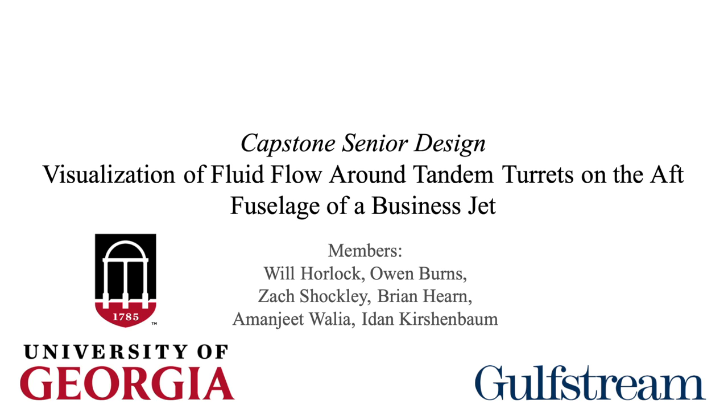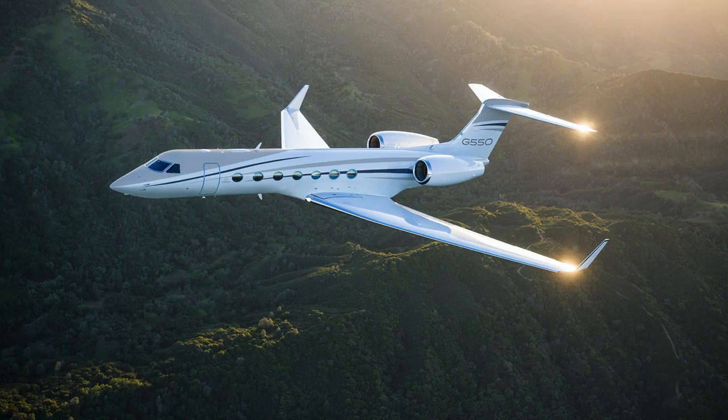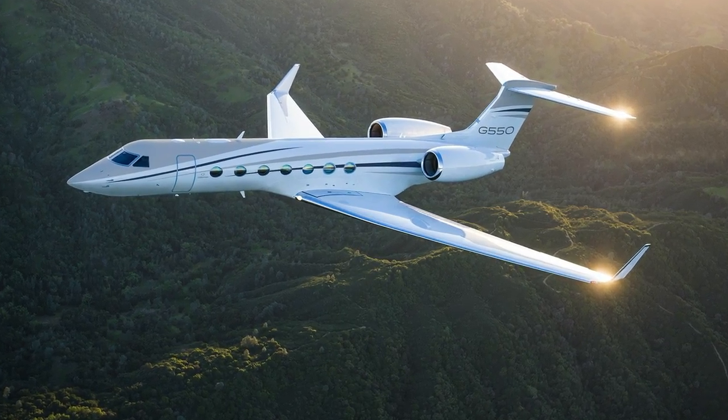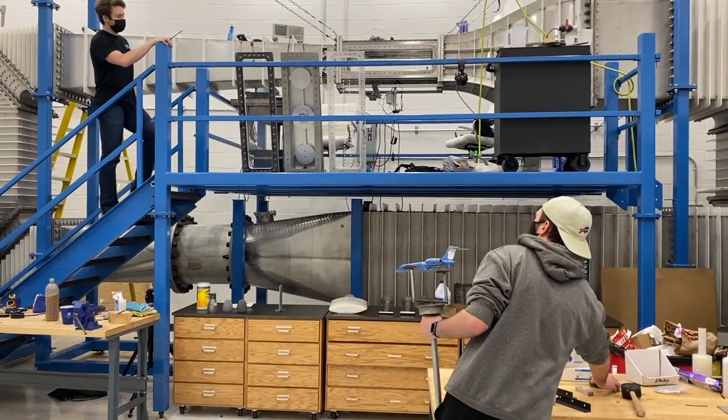The team was tasked with modeling and visualizing the fluid flow around a set of tandem turrets on the aft fuselage of a modified Gulfstream G550 business jet. The objective of the project was to analyze the effects the turrets will have on the loading and aerodynamics of the aircraft.